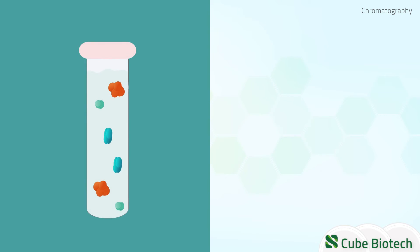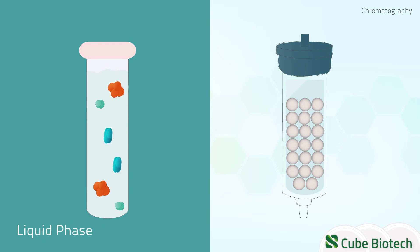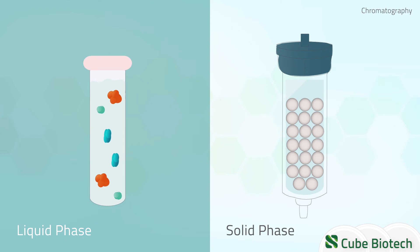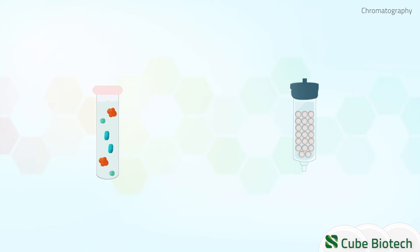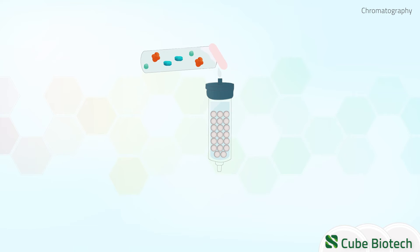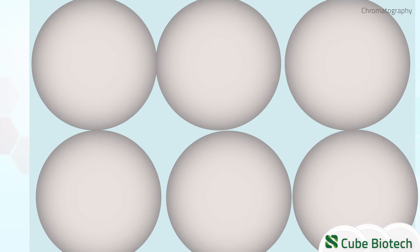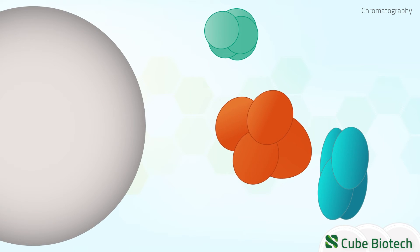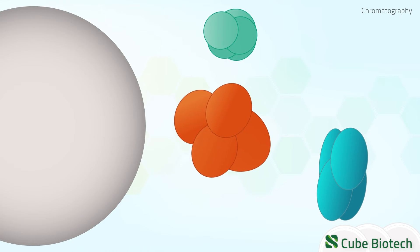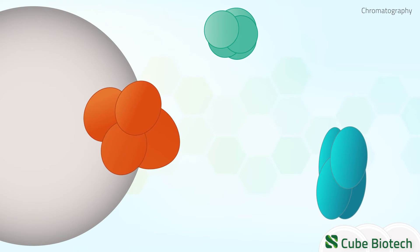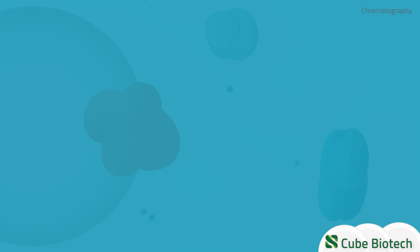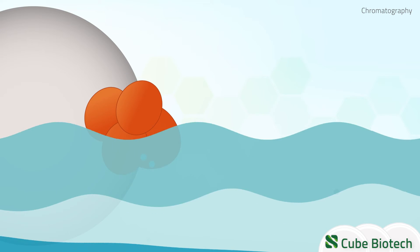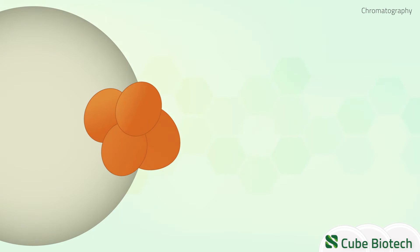Overall, chromatography can be described as a process in which proteins in a solution, called the liquid phase, are separated based on differences in their chemical or physical interactions with a stationary material, called the solid phase. The aim is to exploit the target protein's unique interaction with the solid phase while washing away all other molecules whose interactions differ and eventually elute the target protein from the solution.